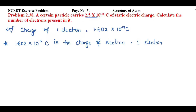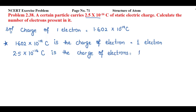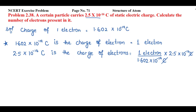Now, the total charge that the particle is carrying is 2.5 × 10⁻¹⁶ coulomb. Setting up the unitary method: number of electrons equals one electron divided by 1.602 × 10⁻¹⁹ coulomb, multiplied by 2.5 × 10⁻¹⁶ coulomb. The coulomb units cancel, leaving us with the unit of electrons only.